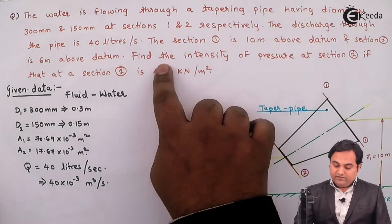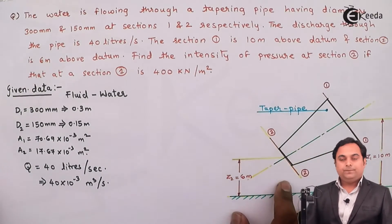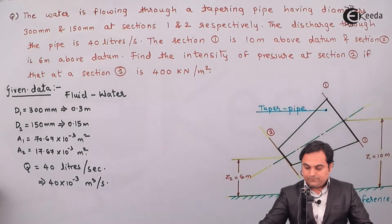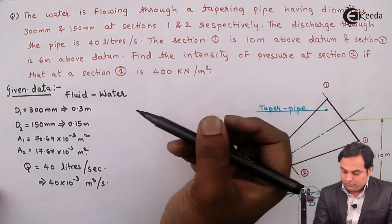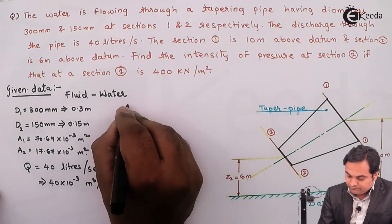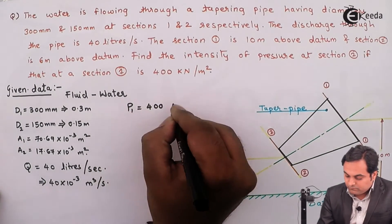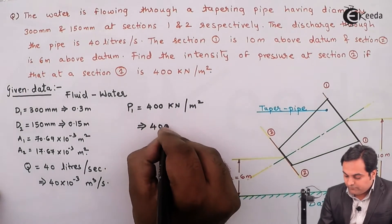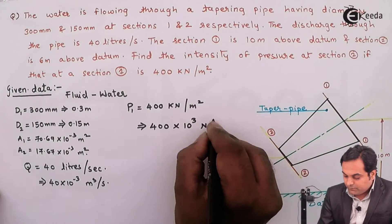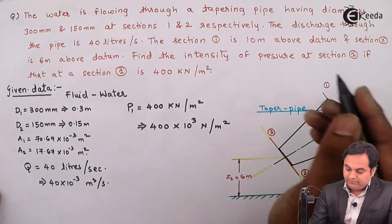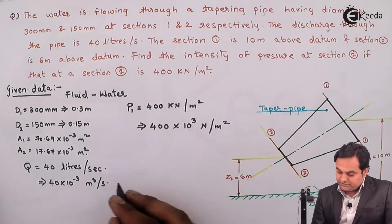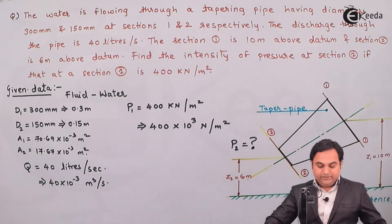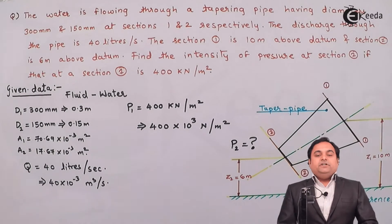Next we have to find the intensity of pressure at section 2 if that at section 1 is 400 kN per meter square. So I will write down P1. This is 400 kN per meter square, so that is 400 into 10 raise to 3 N per meter square. And we have to find the intensity of pressure at section 2, that is P2 is what we have to calculate here. So this much is the data part.